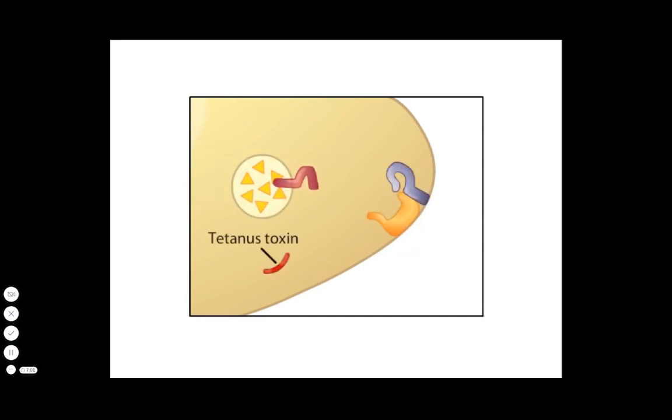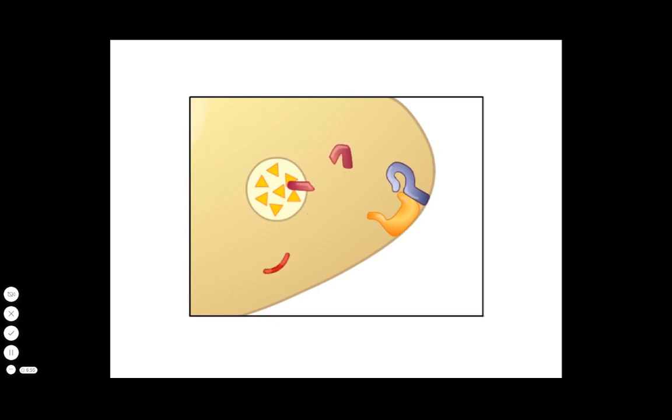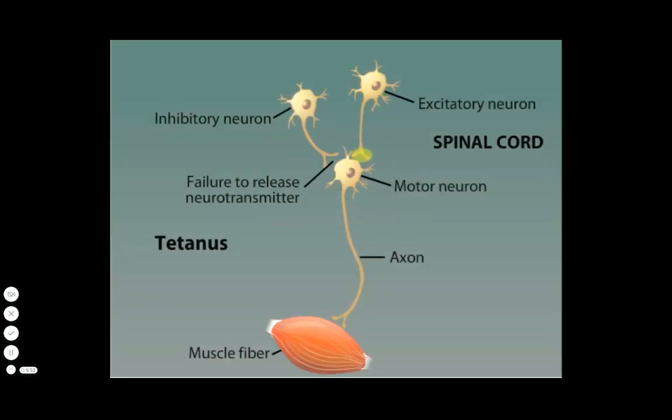The tetanus toxin is a protease that cleaves VAMP. Therefore, when the next neural signal arrives, the synaptic vesicle will not be able to fuse with the plasma membrane. The excitatory neuron will act unopposed, resulting in excessive nerve signaling to muscles.